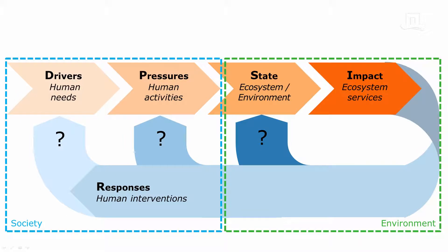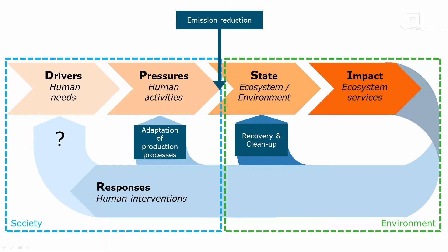Let me now use the DPSIR framework to illustrate the different interventions possible to tackle the problem. Each intervention acts at a different place in the intervention chain. One possible intervention is cleanup programs — this intervention acts on the state variable and improves the state of, for instance, our surface waters. But the effect will be temporary if the causes are not tackled. Another intervention would be the adaptation of production processes, such as increasing the nutrient efficiency in plant production.